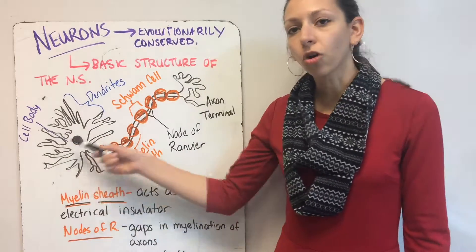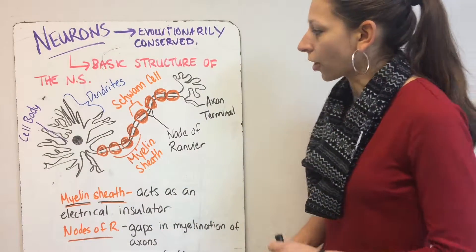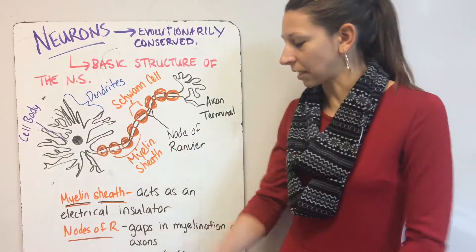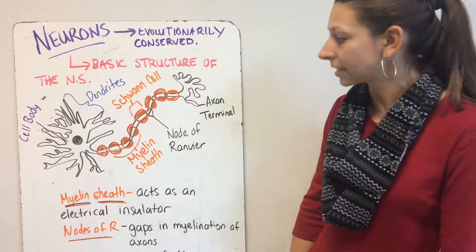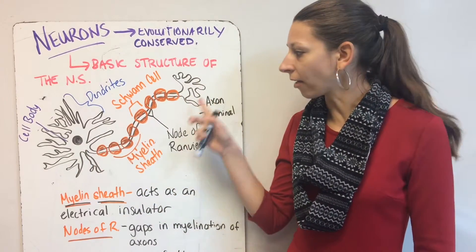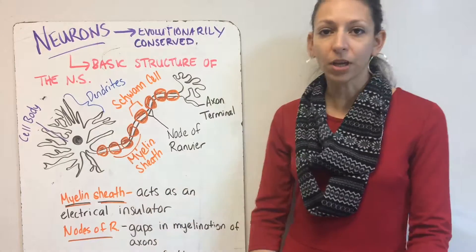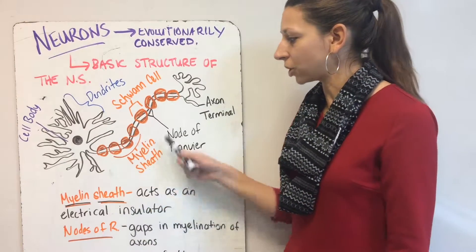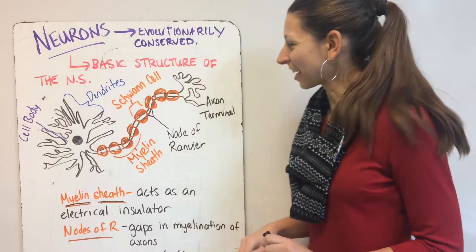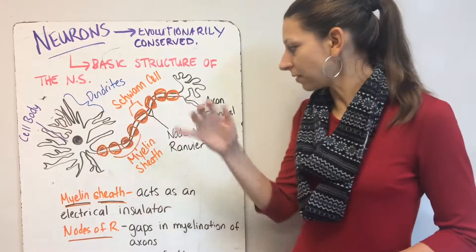Our cell body, or soma, is the central part of our neuron with the nucleus inside. We have these branchy-looking things called dendrites that receive signals from other neurons. We have our axon here which sends signals down the cell, surrounded by Schwann cells to create a myelin sheath.